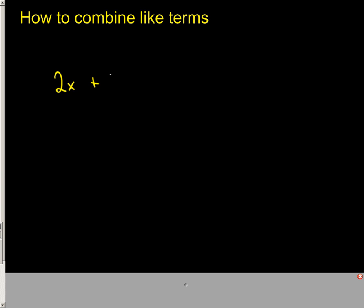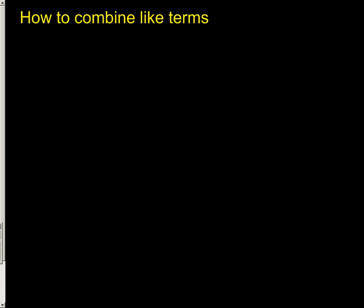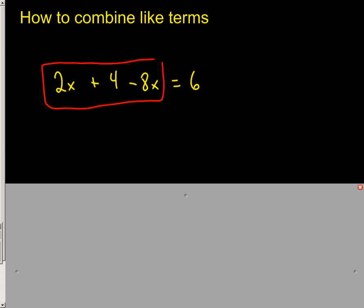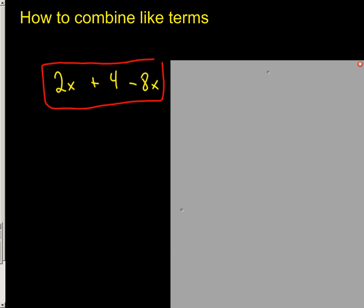When you're trying to solve these equations, you need to combine like terms. Whenever I say there's a step of combining like terms, focus on each side of the equation all by itself and pretend it's an expression. Pretend that the equal 6 did not even exist right there. Where are my like terms? Here's a positive 2x. That's not a like term because there's no x. But here's a negative 8x. 2 minus 8 is negative 6x. And then I just pull down my plus 4.